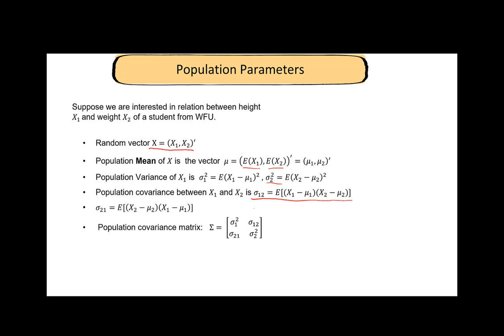We can summarize all of the variances and covariances in the covariance matrix sigma. Sigma is the notation that we shall use for population covariance where the first element sigma 1 squared is the variance of the first element, then the second element in the first row is sigma 1 2, then sigma 2 1 and sigma 2 squared. Note that sigma 1 2 and sigma 2 1 are the same.